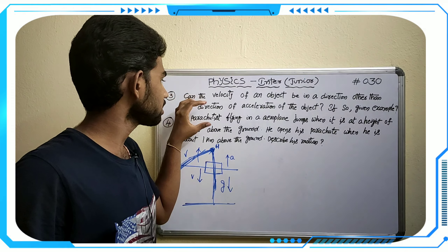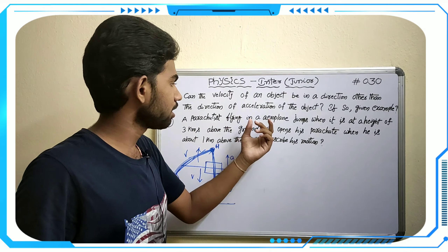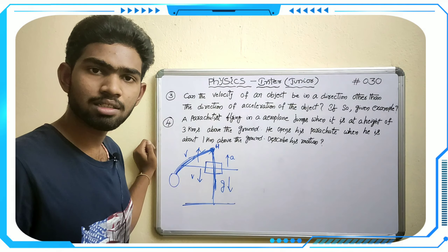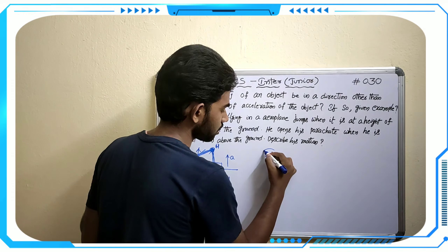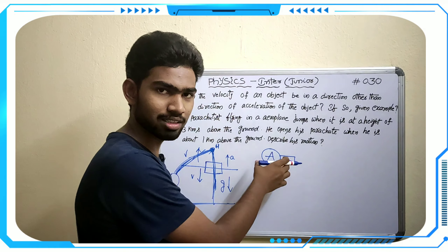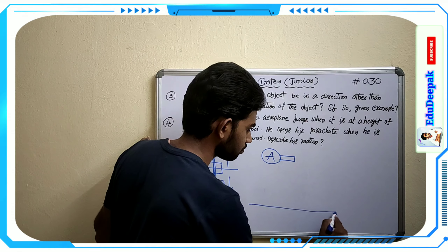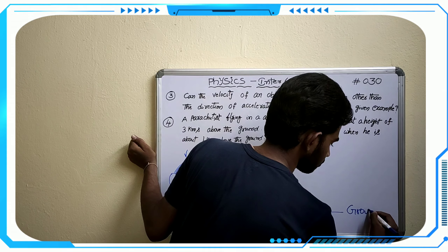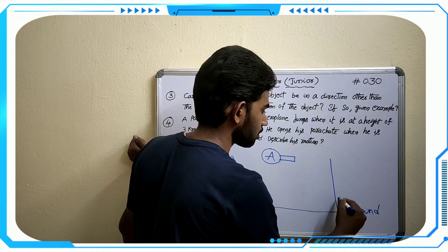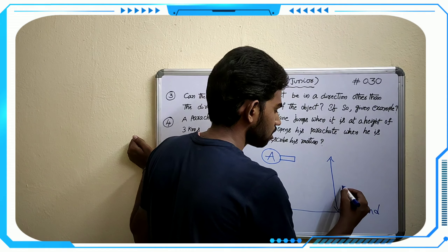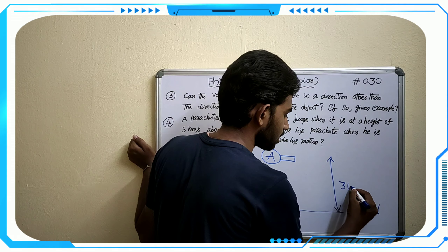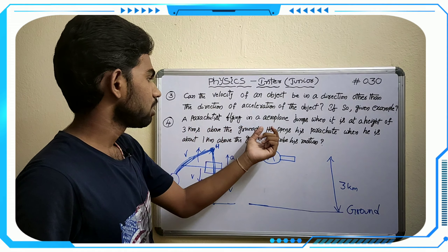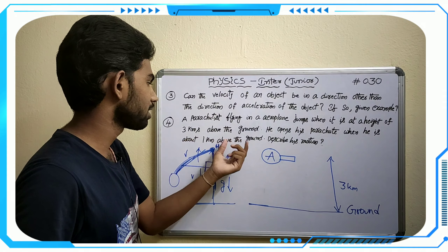Now entering the fourth question: a parachutist flying in an airplane jumps when it is at a height of three kilometers above the ground. I am representing it with a plane diagram — this is the airplane, this is the ground, and the airplane is three kilometers above the ground.